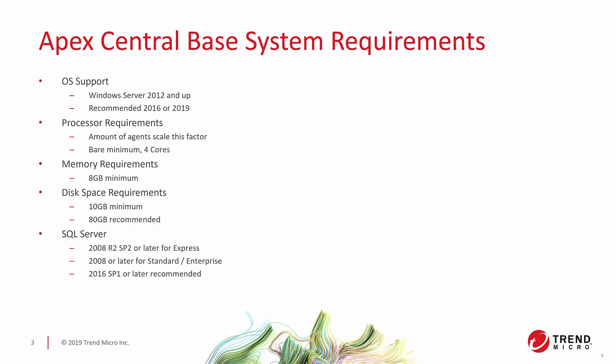Apex Central has very similar characteristics in its base system requirements: Windows Server 2012 and up — again, 2016 or 2019 is recommended. Processor Requirements scale a little bit, but not as much as the Apex One server; once you get a bunch of agents, you'll see that level out. Memory Requirements: 8 GB, and that holds true through about 50,000 agents.